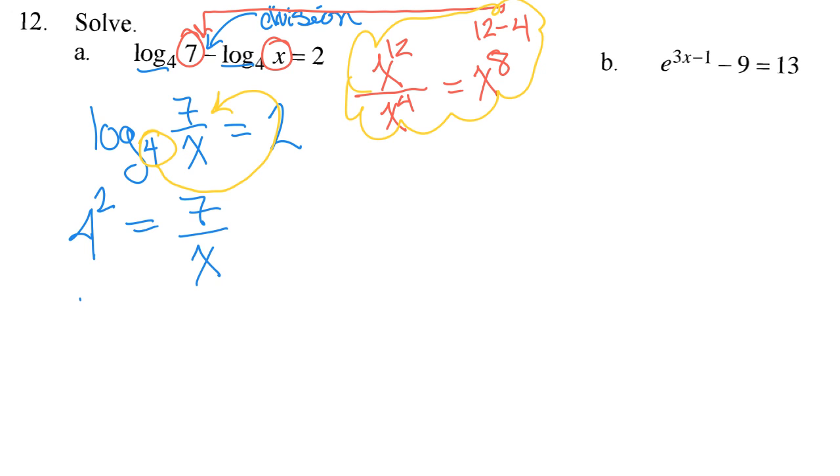Well, 4 squared is 16. 16 equals 7 over x. Treat this as a proportion. Put 16 over 1 and cross multiply. So I get 16x equals 7. So x equals 7 sixteenths.